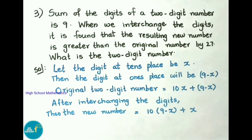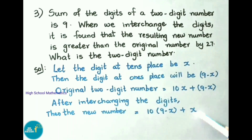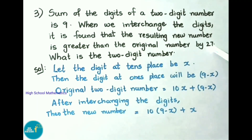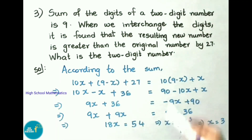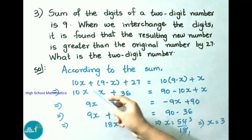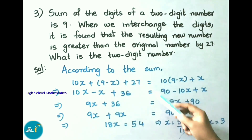After interchanging the digits, the new number will be 10(9 − x) + x. The new number is greater than the original by 27, so: 10x + (9 − x) + 27 = 10(9 − x) + x.